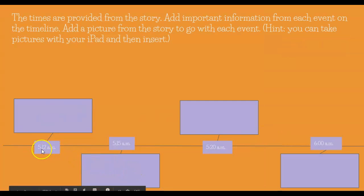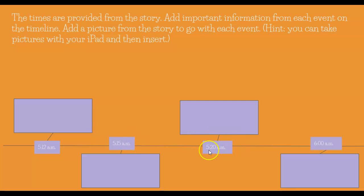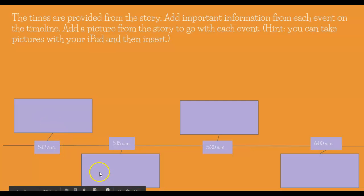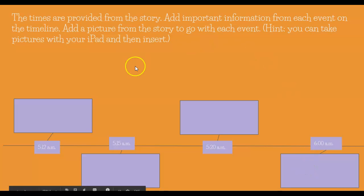Today you guys are going to make your own timeline. I've already provided the times for you: 5:12 a.m., 5:15 a.m., 5:20 a.m., and 6:00 a.m. In the boxes, you're going to write what happened — the event at 5:12 a.m., the next event at 5:15 a.m., then the event at 5:20 a.m., and finally the last event at 6:00 a.m.